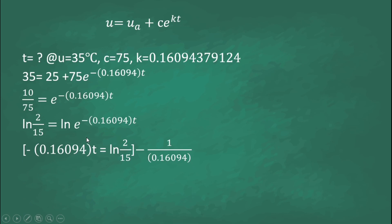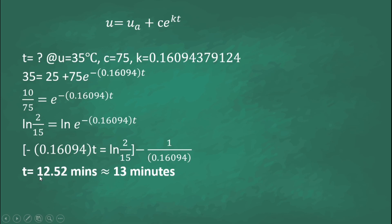Simplifying, negative 0.16094t equals ln(2/15). Since we have the coefficient of t, we can cancel it by multiplying both sides by negative 1 over 0.16094. Simplifying, we get the value of time t equals approximately 12.52 minutes. That's all for this video. Thank you.